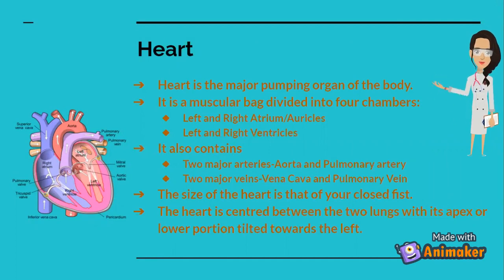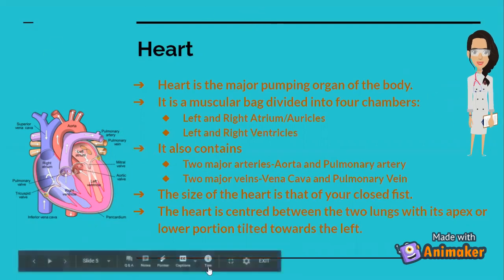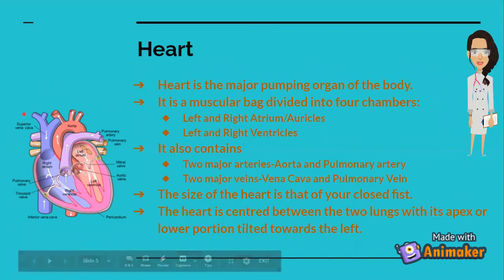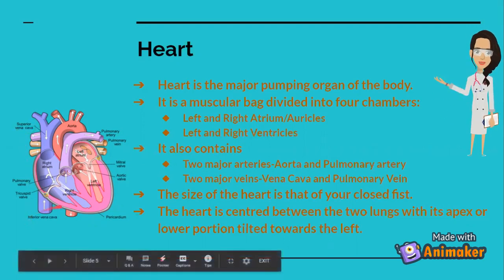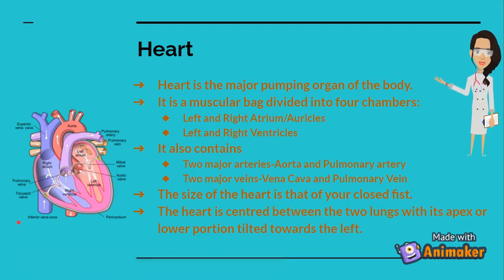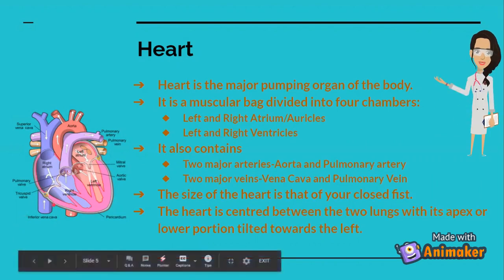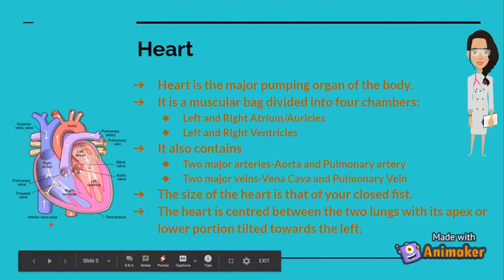Now let's learn the circulation of blood. First, your superior vena cava takes blood from the upper portion of your body, and your inferior vena cava takes blood from your lower portion of the body — and the blood is impure, of course. Then the superior vena cava and the inferior vena cava bring blood to your right atrium.